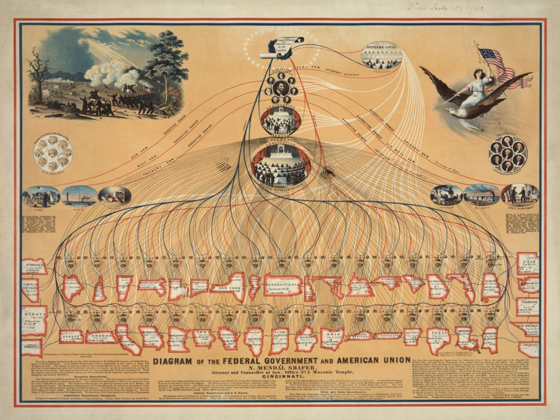Each state has its own written constitution, government, and code of laws. The Constitution stipulates only that each state must have a republican government. Therefore, there are often great differences in law and procedure between individual states, concerning issues such as property, crime, health, and education, amongst others. The highest elected official of each state is the governor. Each state also has an elected state legislature — bicameral as a feature of every state except Nebraska — whose members represent the voters of the state. Each state maintains its own state court system.